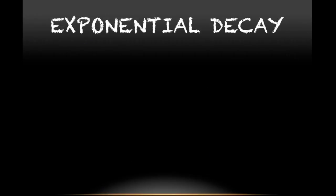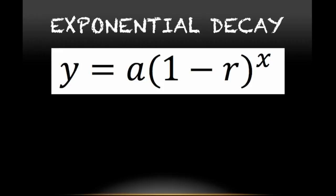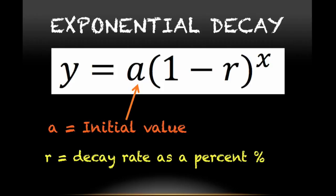In the case of exponential decay, we have a different equation. The equation is this: y equals a parentheses 1 minus r everything to the x. Now in this case, the only difference is instead of a plus, we have a minus. A will still be my initial value, and my decay rate, in this case decay, will still be represented by a percent and the r value.